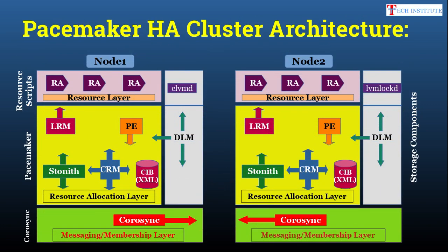This is the overview of the HA cluster architecture. You can see there are three components: the messaging or membership layer at the lowest level shown in green, then the resource allocation layer on top of that, and then the resource layer. The messaging or membership layer mostly consists of Corosync, whereas the resource allocation layer consists of Tonit, CRM, CIB, PE, LRM, and related components. The resource layer consists of the resource scripts.